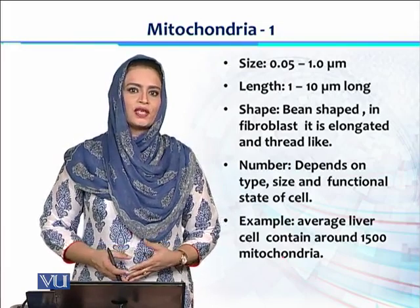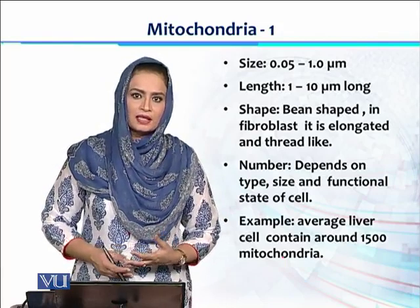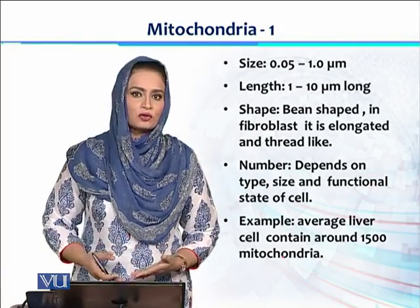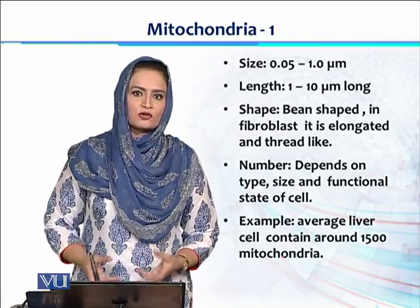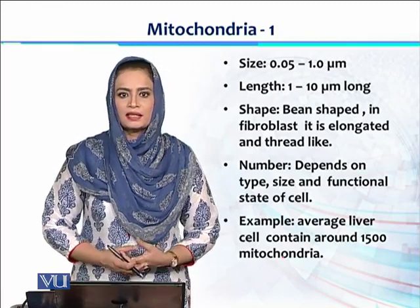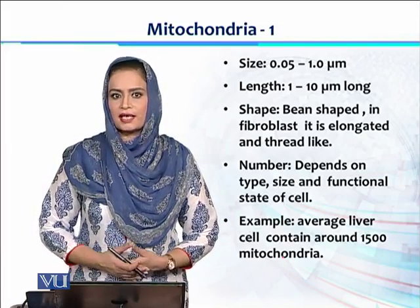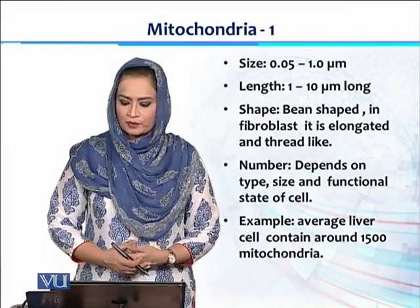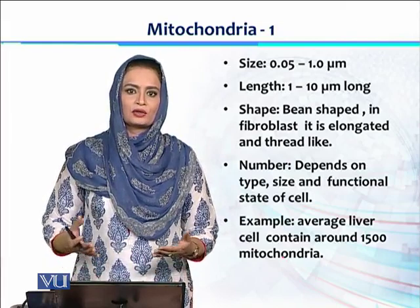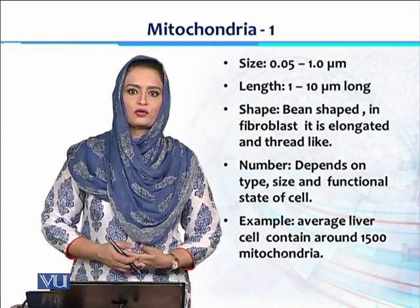The number of mitochondria depends upon the type of tissue, and also on the size and functional state of the cell. The number is much higher in muscles compared to other tissues. Another example is the liver, which performs multiple functions and needs a lot of energy. An average liver cell contains about 1500 mitochondria.